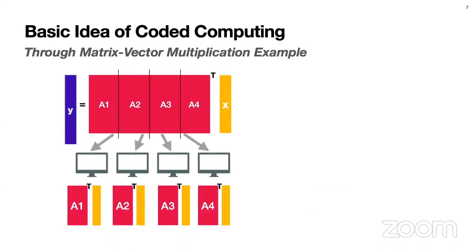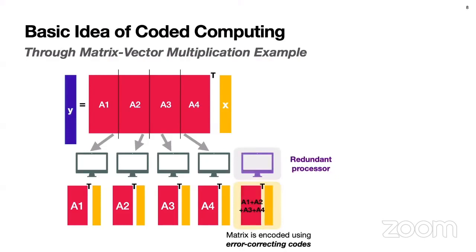Let me give you an idea of how this could work through a simple toy example of matrix-vector multiplication. We want to compute the matrix-vector product Y = A^T X, using four distributed nodes. Node 1 will compute A1^T X, node 2 will compute A2^T X, and so on. We want to add one redundant node, and instead of giving it just some part of A, we give it an encoded input using the simplest form of error-correcting codes — essentially a checksum. So the redundant processor gets A1 plus A2 plus A3 plus A4.